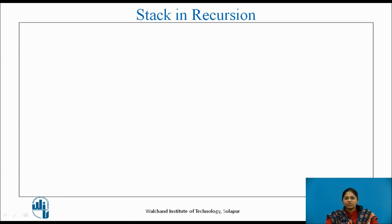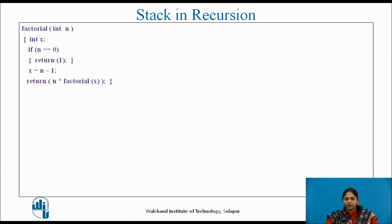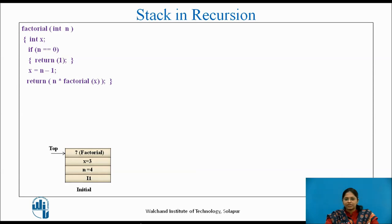Now let's see how the stack is used in recursion. To explain this, we are again taking the factorial example, showing how the stack grows for each recursion call. Initially, you can see the stack elements: i1 is representing the initial return address; n is representing the number 4, for which the factorial has to be calculated; and x is equal to 3, which is n minus 1. Now top is pointing to factorial, which has to be calculated.